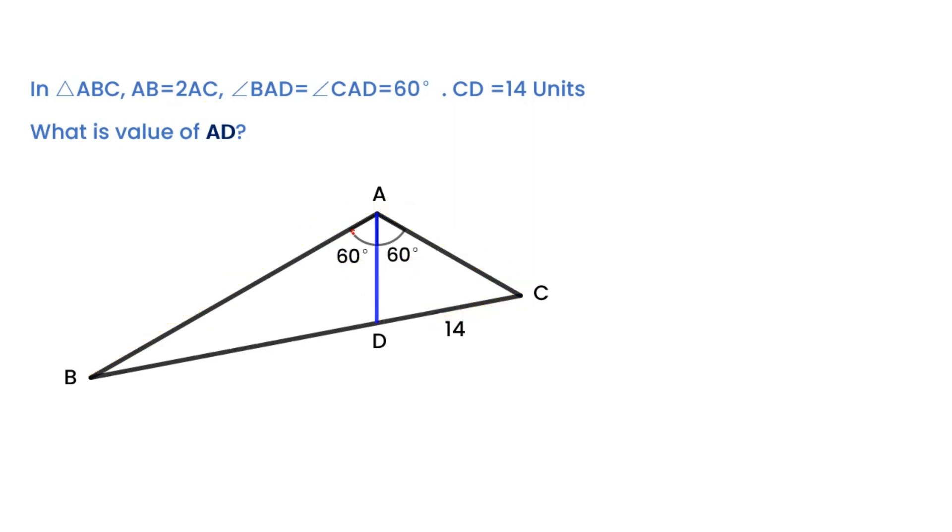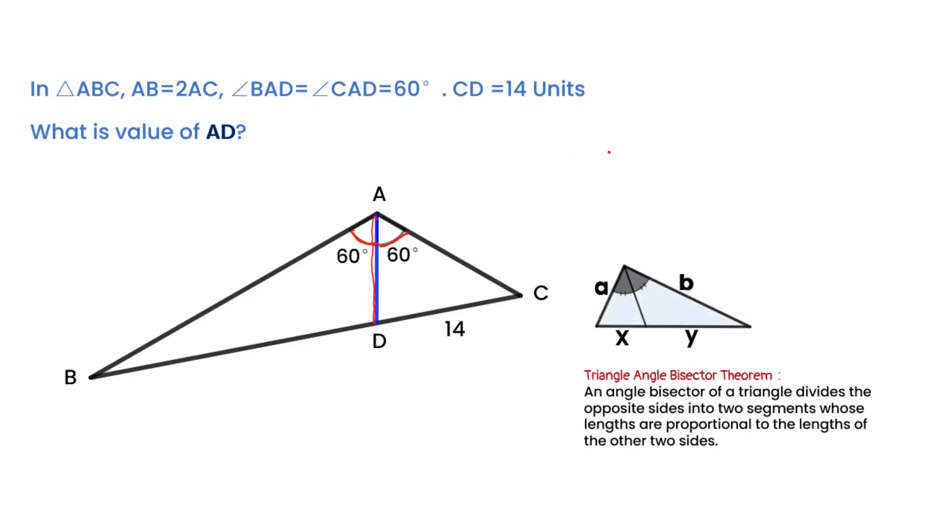For angle BAD equal angle CAD, segment AD is a bisector of triangle ABC. We can use angle bisector theorem firstly. We can get this equation: BD over CD.